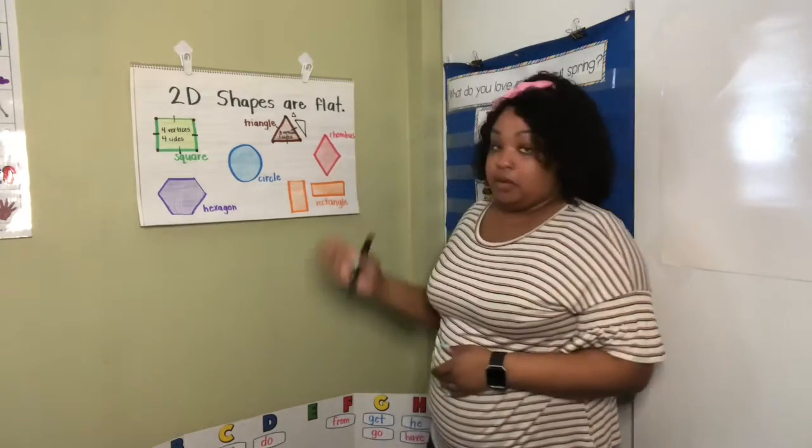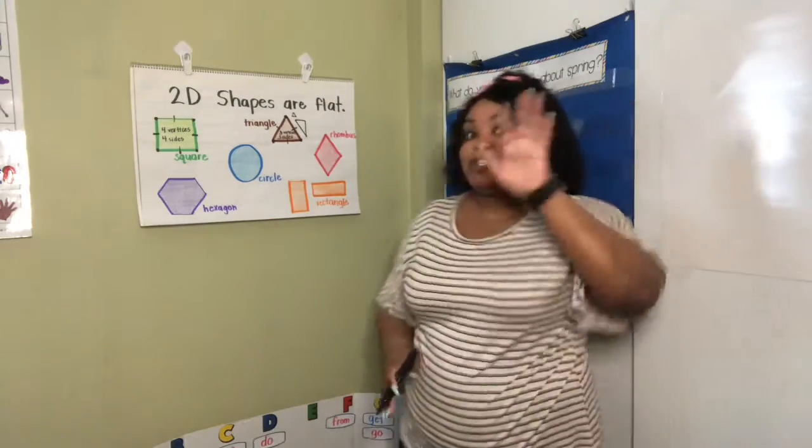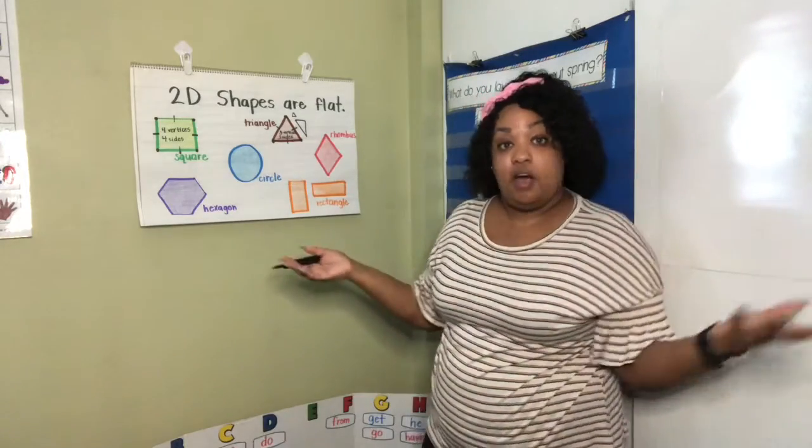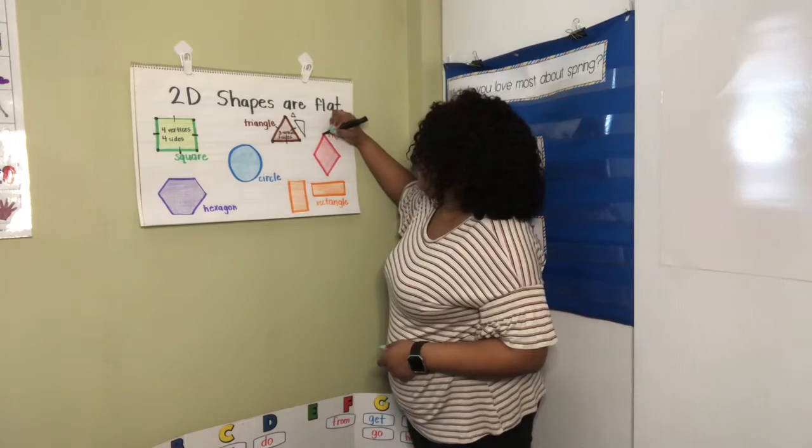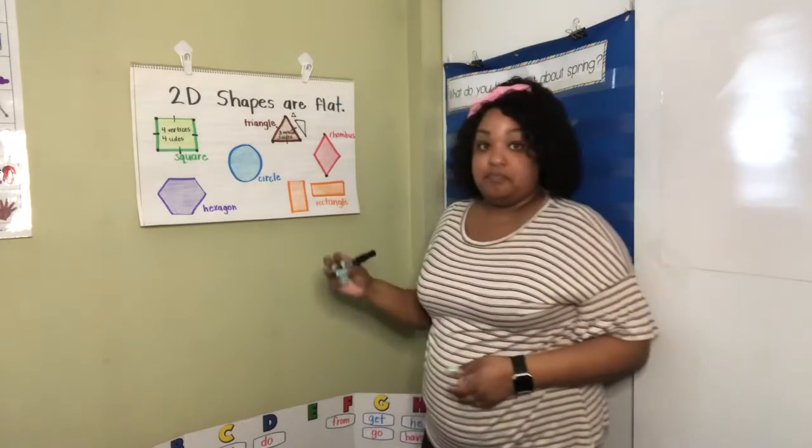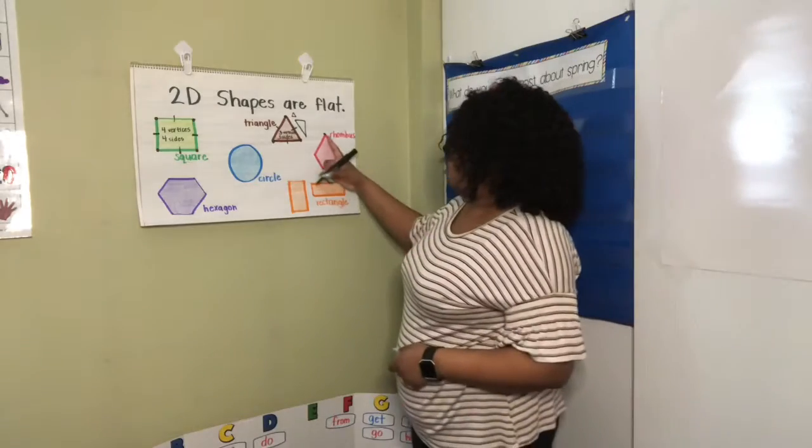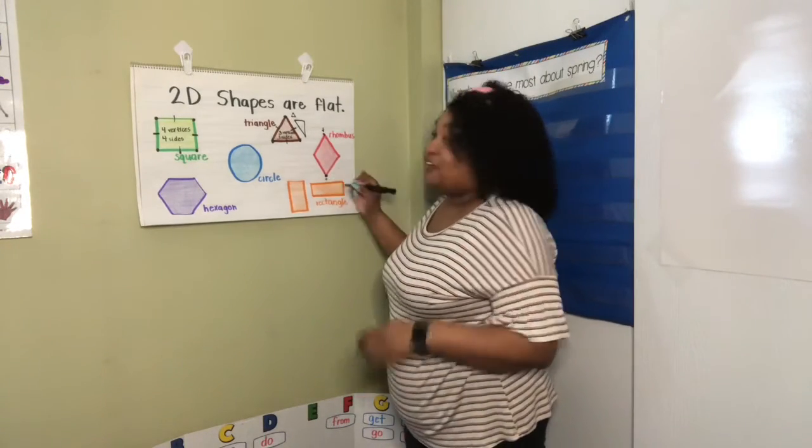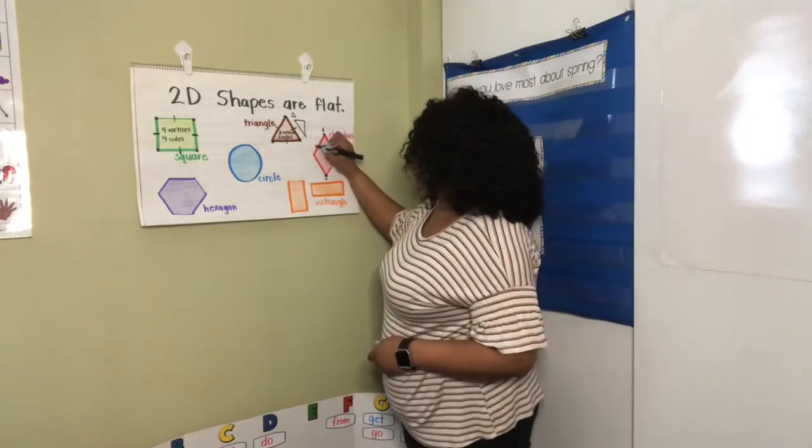Now, this shape right here, if we put a triangle on the top and a triangle on the bottom, it would make a rhombus. A rhombus has a point at the top and a point at the bottom. It also has four corners, four vertices I mean, and four sides.